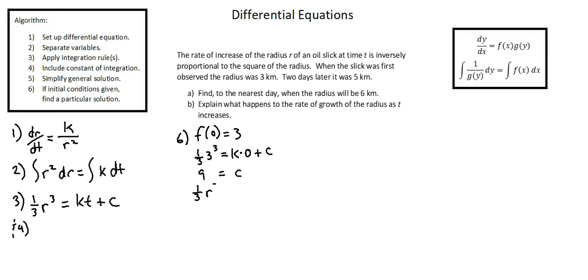Now we can iterate to an updated equation. One third times radius to the power of three equals kt plus, instead of c, we now have a value for c. That value is nine. Let's go up to the third sentence. Two days later, it was five kilometers. F of two equals five. We'll input these values into the updated equation to find the value of k. One third times radius cubed. The radius is five. Five cubed equals k times t. In this case, the value of t is two plus nine.